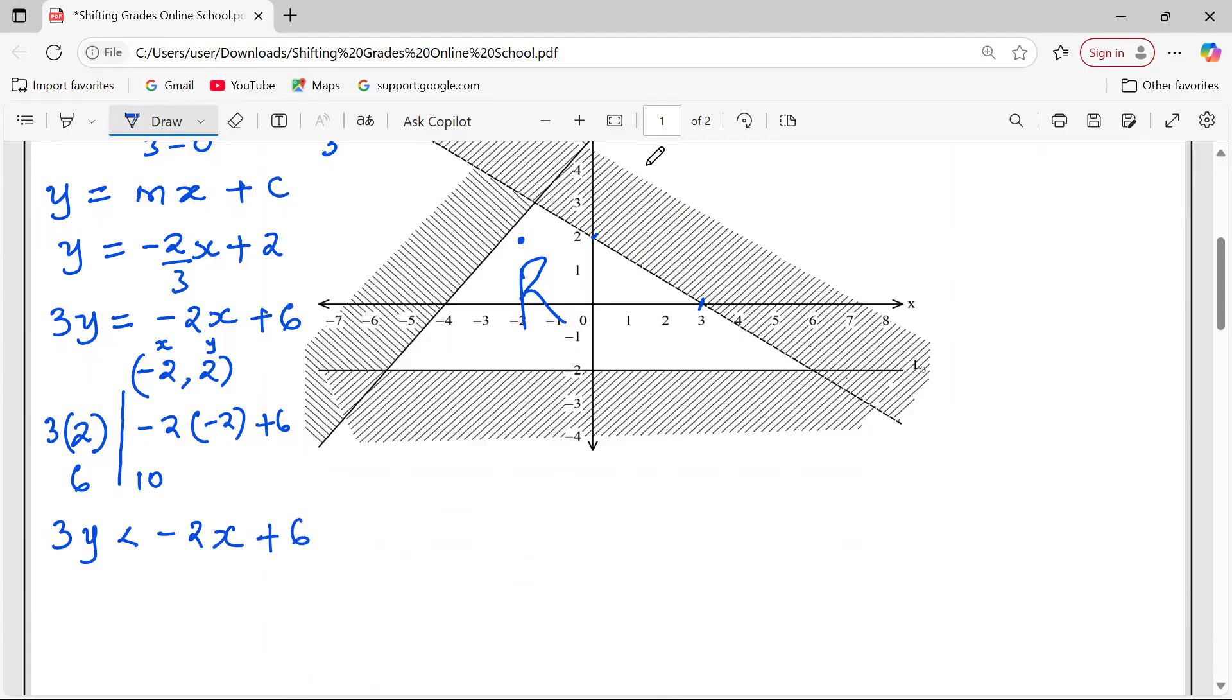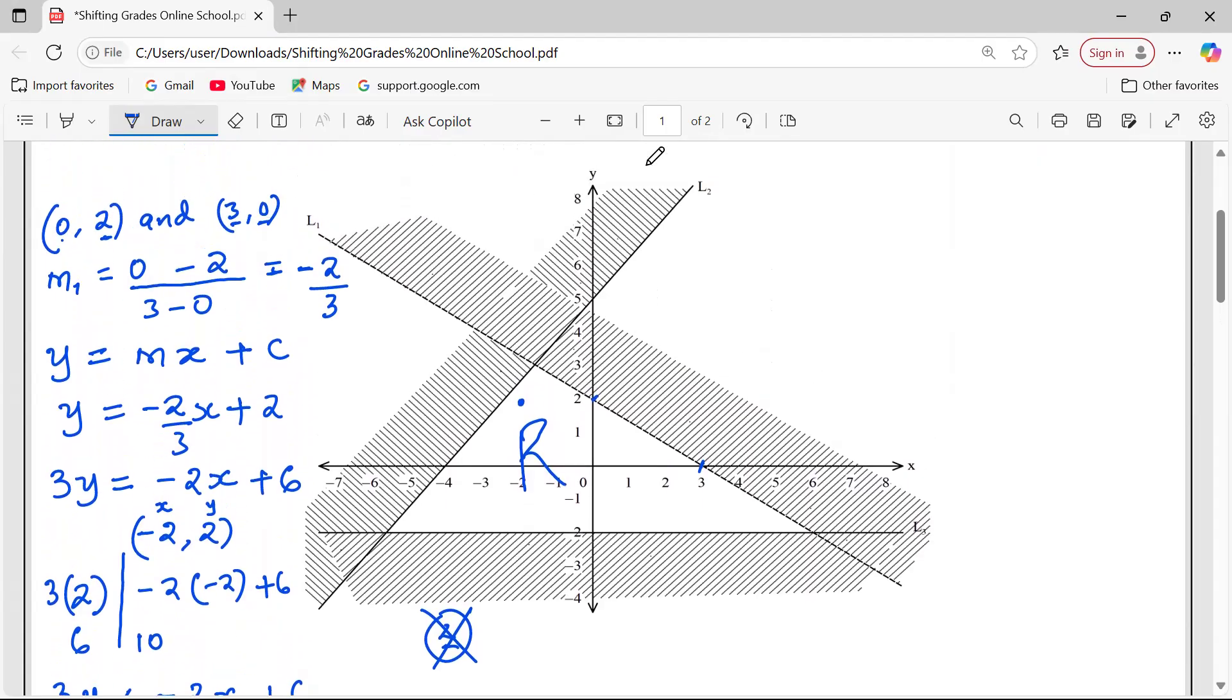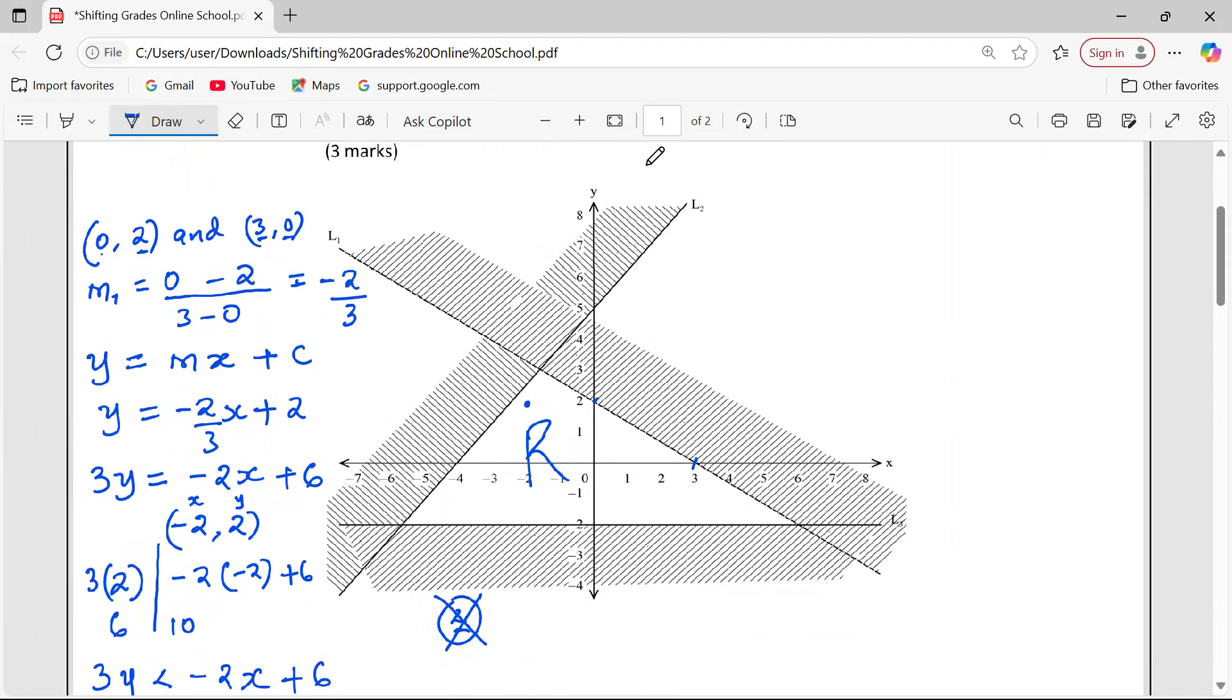So I write now the equation, but now with an inequality signpost: 3Y less than negative 2X plus 6. That is the inequality for line 1. Remember, the line is dotted, so there is no way we could have said less than or equal to. We could not have used this because of the dotted nature. When the line is complete or a full line, then we introduce or equal to upon that inequality signpost. So let's look at L2. That is L1, and we are done.